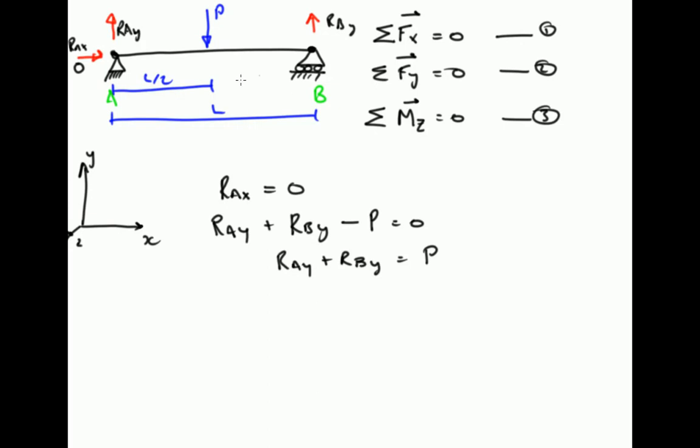We can rearrange that equation to find that R_Ay plus R_By is equal to P. And that's fairly intuitive, if you look at the reactions in the upwards direction, they must equal all the forces in the downwards direction. The upwards direction, we've only got reactions, so the sum of those must equal the P in the downwards direction, which is given by this rearranged equation from the second equation of static equilibrium.